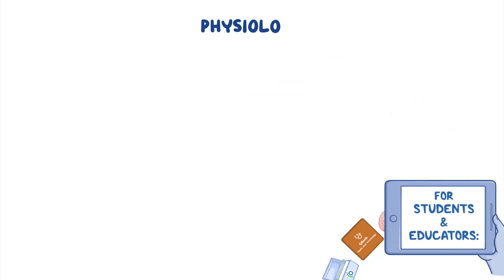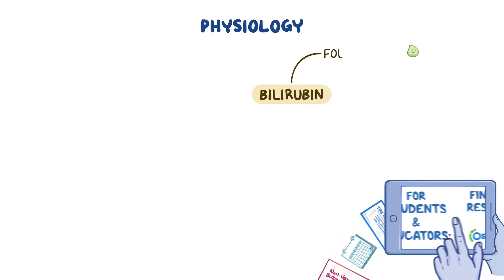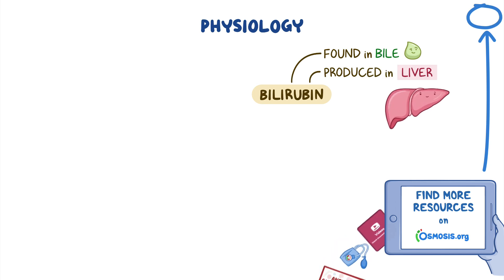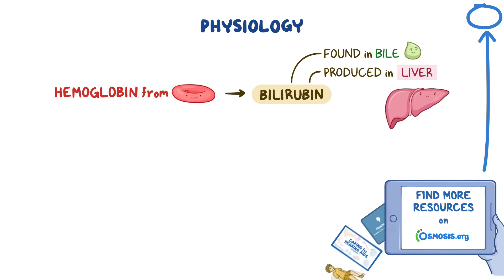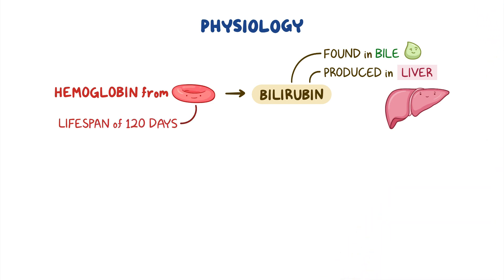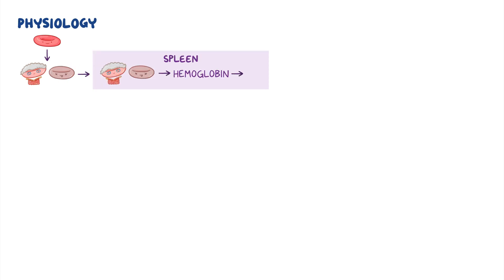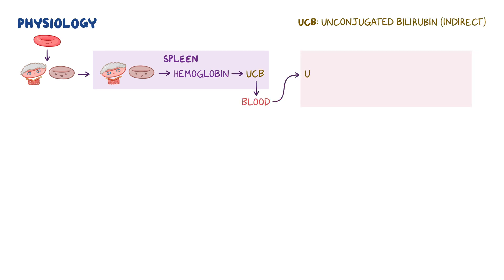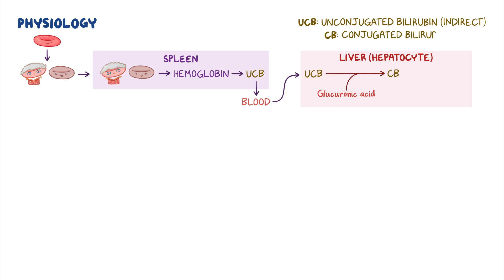Let's go over some physiology. Bilirubin is a yellowish pigment that's normally found in bile and is produced in the liver by breaking down hemoglobin from red blood cells. Normally, red blood cells have an average lifespan of 120 days. When red blood cells get old or damaged, they travel to the spleen, where they are broken down to release hemoglobin. The hemoglobin is degraded into unconjugated or indirect bilirubin, which is then released into the bloodstream. Unconjugated bilirubin then travels to the liver, where it gets taken up by hepatocytes. These cells bind a molecule called glucuronic acid to the unconjugated bilirubin, forming conjugated or direct bilirubin.